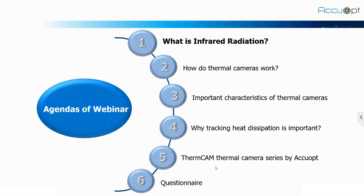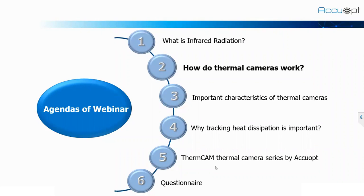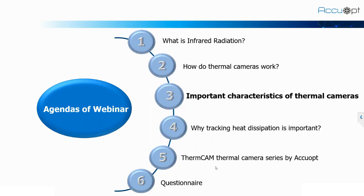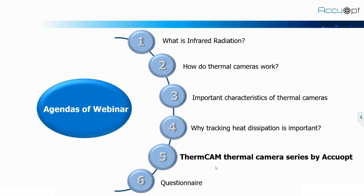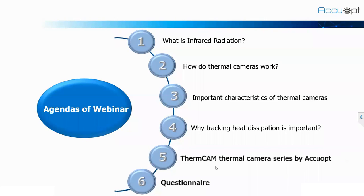So during this session, we will be discussing over the following topics. Number one, what is infrared radiation? Number two, how do thermal cameras work? Then we will see some important characteristics of thermal cameras. And then we will look at why tracking heat dissipation is important and why we need to measure the temperature. Then we will have a look at the Thermcam series of thermal cameras by ECHIOPT. And at last, we will have a questionnaire where you can share your queries. You can also share your queries during the session in the chat box.